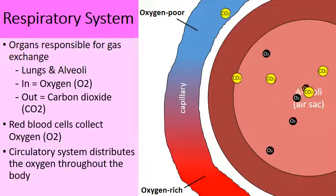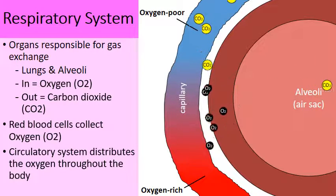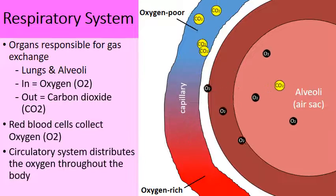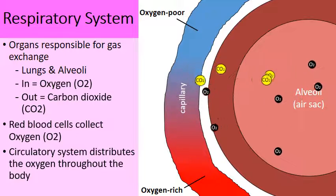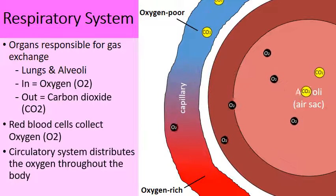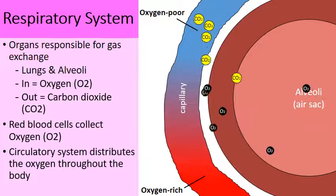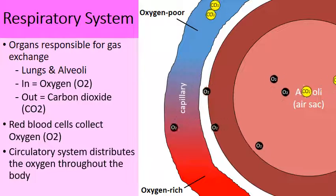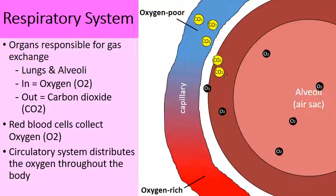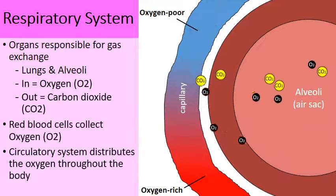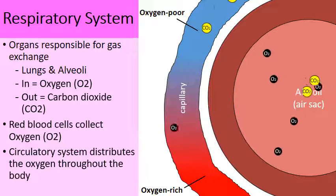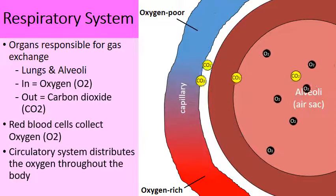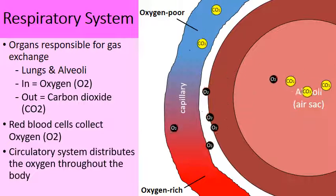Your heart is pumping the blood and the blood cells all throughout your body. This is how the gases carbon dioxide and oxygen are exchanged at the alveoli. We're going to go into this in a little more detail in a moment.